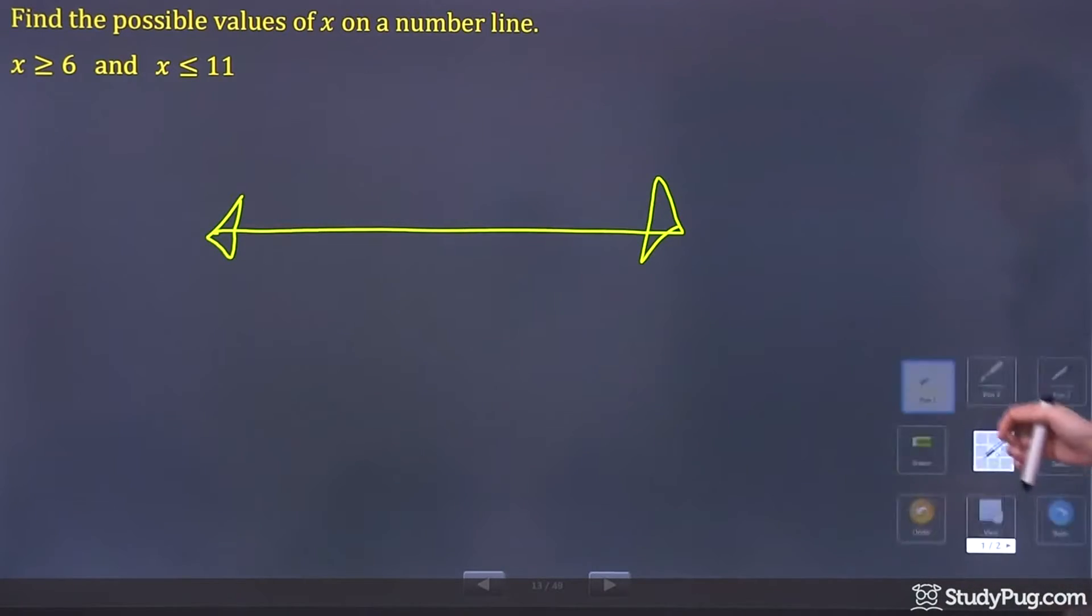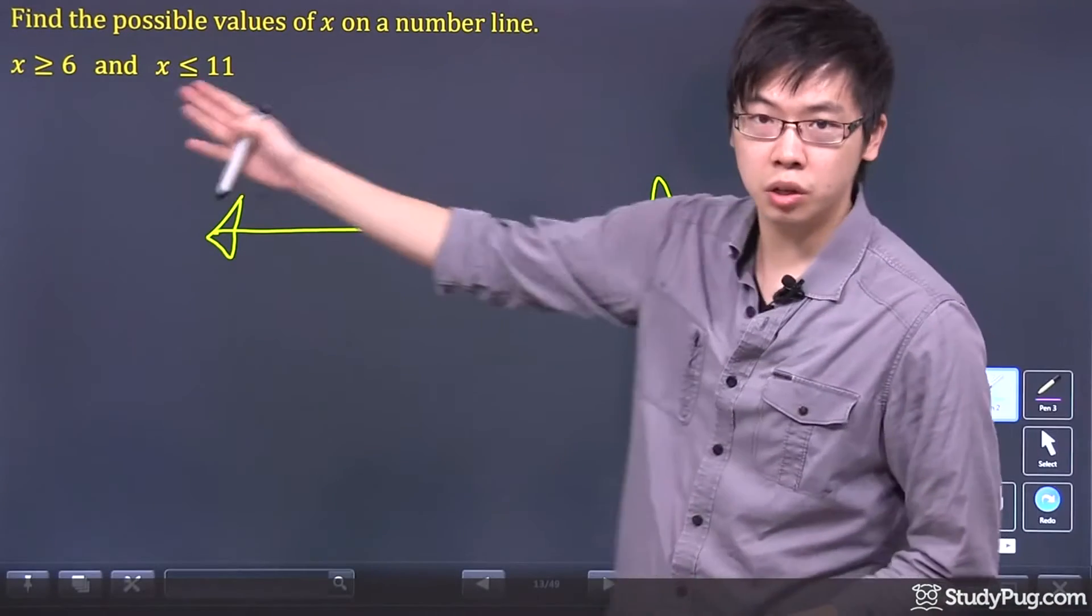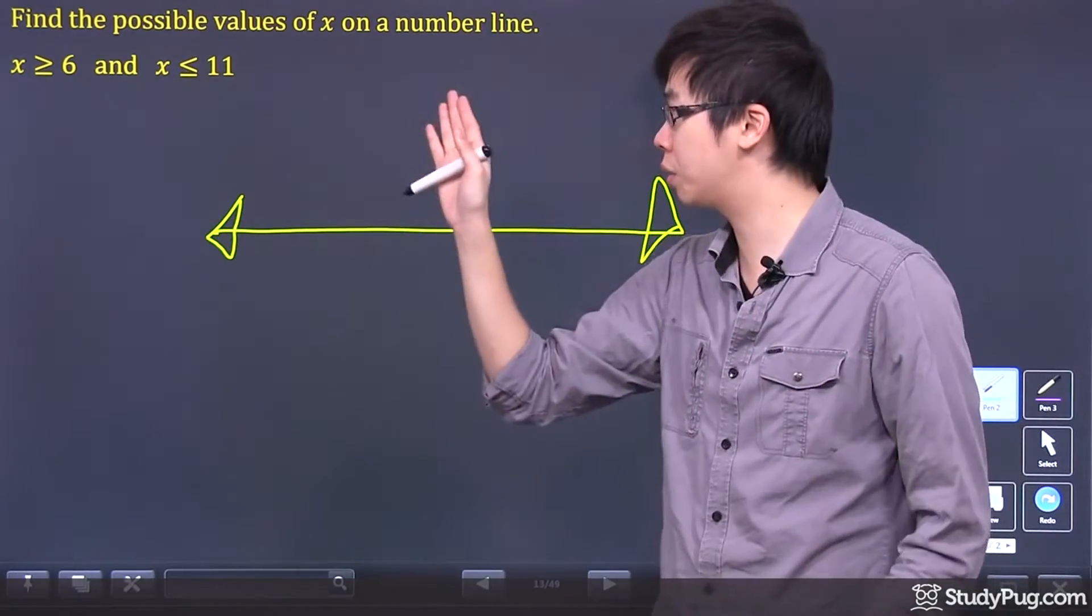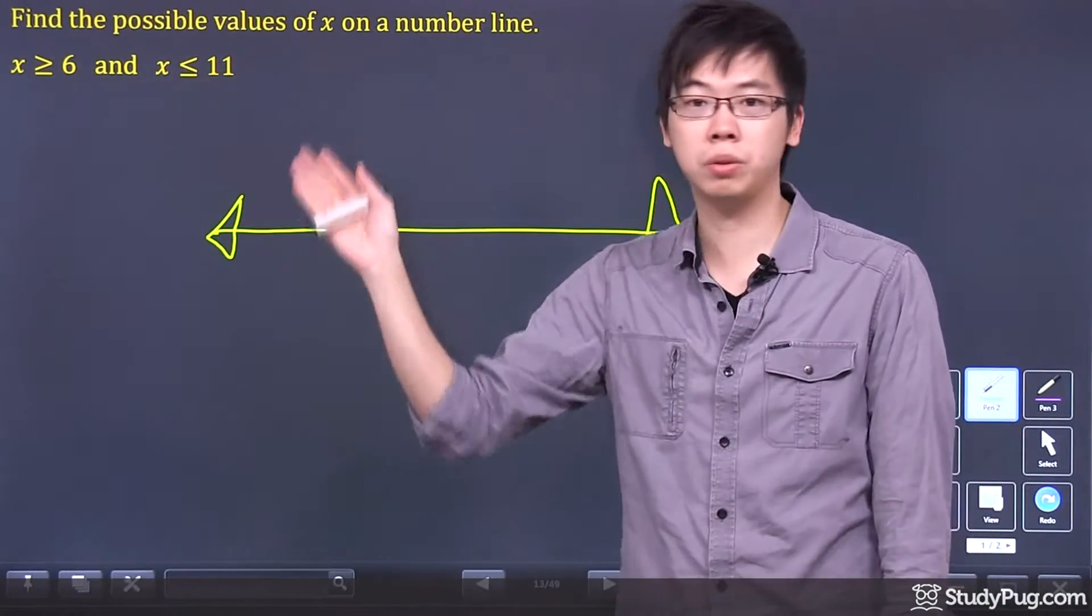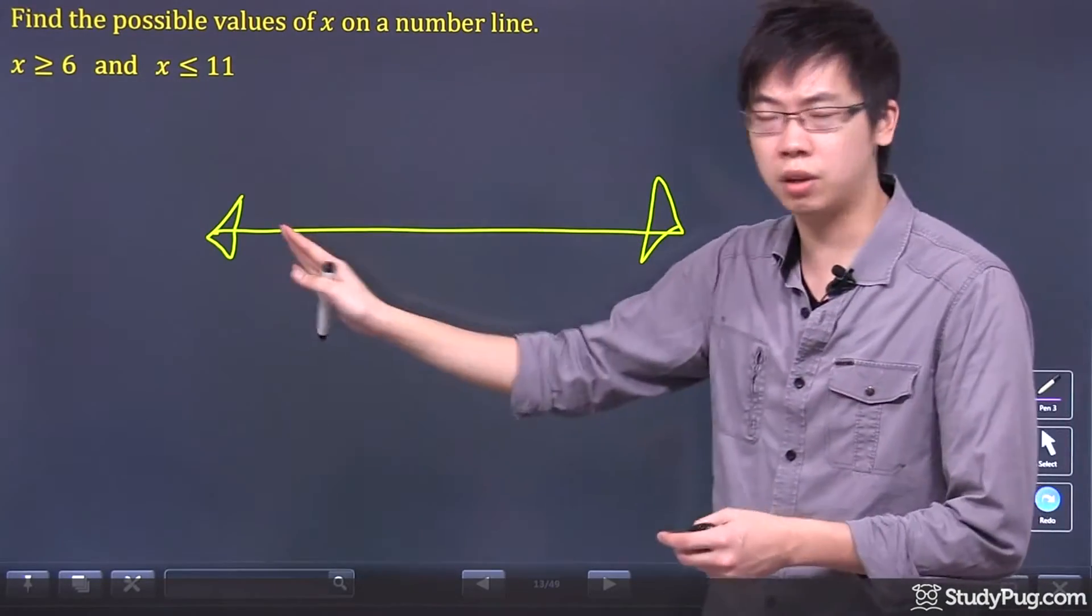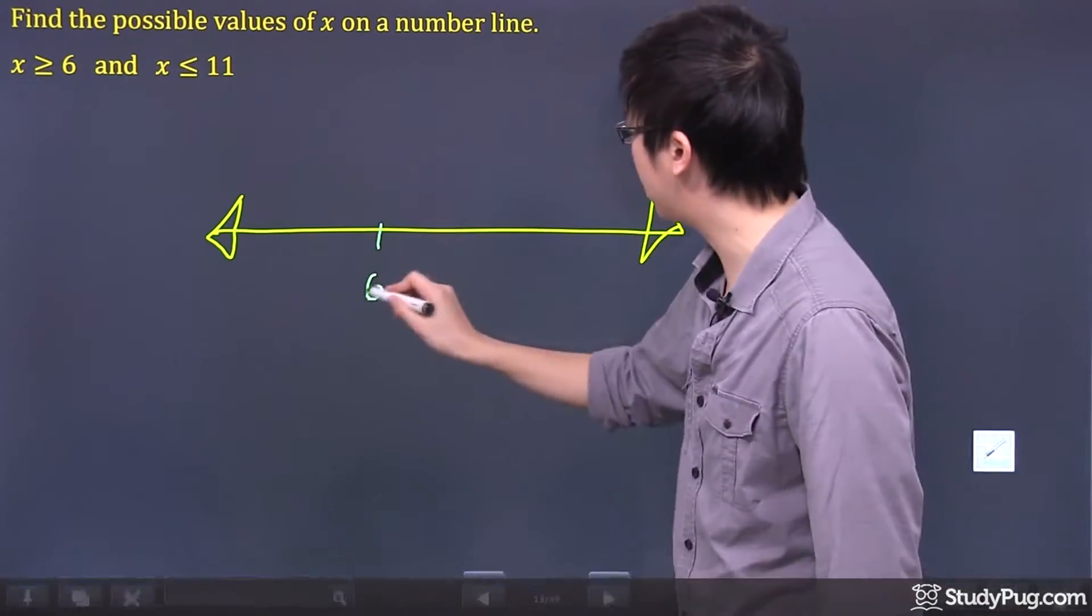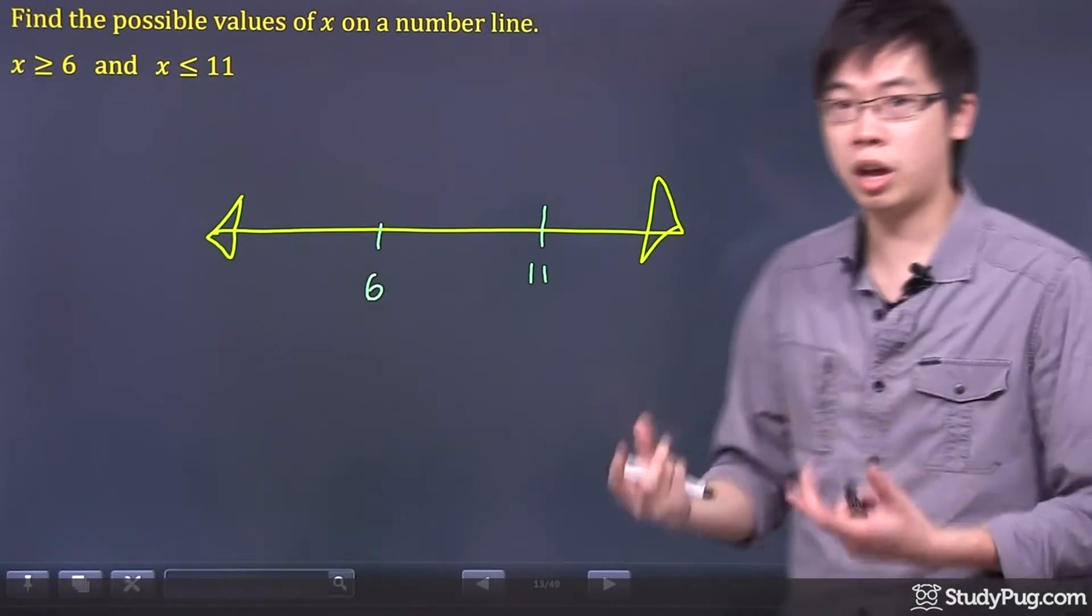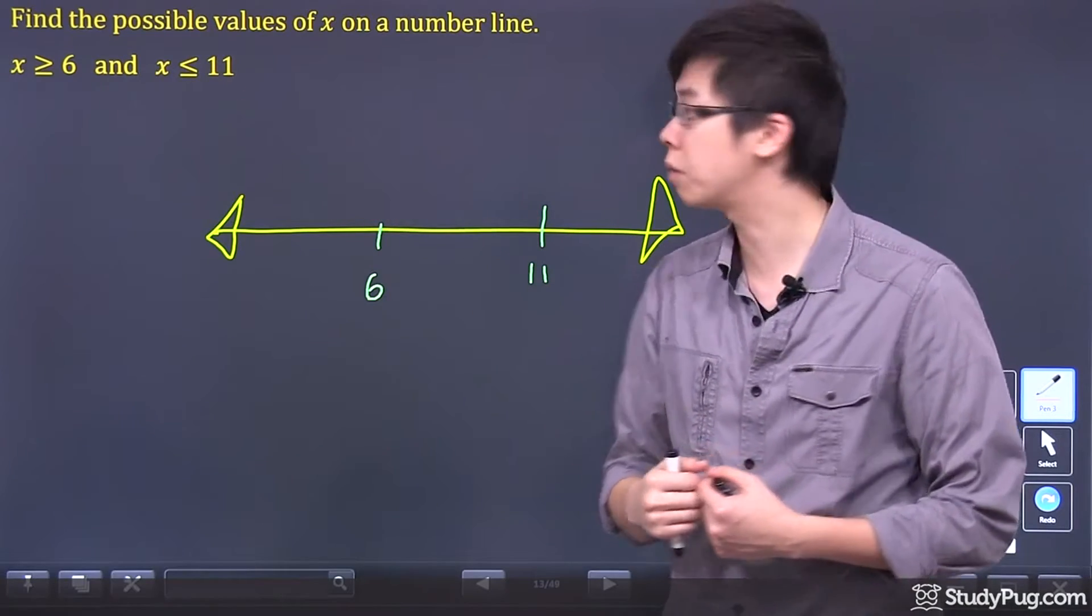So what happened is we have a bunch of numbers here that says x is greater than 6, and at the same time that x are also less than or equal to 11. So it seems like it's greater than 6 but less than 11. So what I would do is I'll put a 6 down here and I'll put 11 down here. And then I just need to draw a line to represent that relationship there.